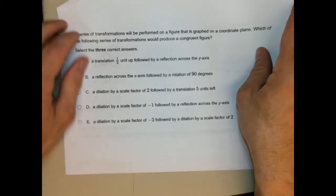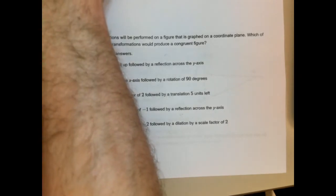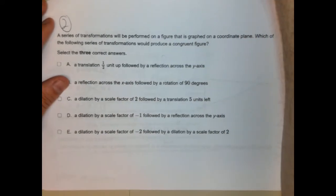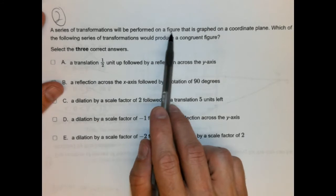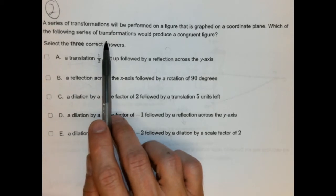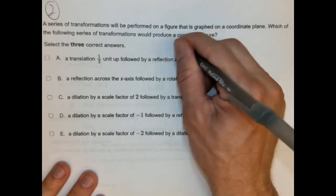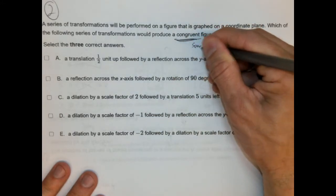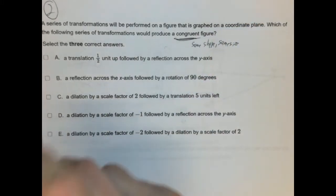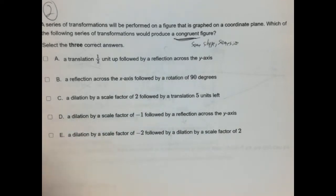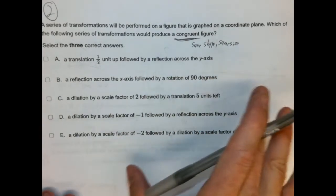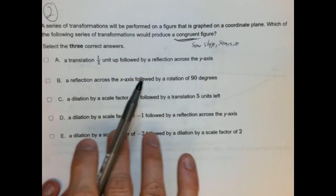Now this one, this one's kind of, this one can be tricky. This one can definitely be tricky if you're not paying close attention. So, this is number two. A series of transformations will be performed on a figure that is graphed on a coordinate plane. Which of the following series of transformations would produce a congruent figure? So, we need to know what congruent means. Congruent means same shape and same size. And by the way, the link to this test is in the video description, so make sure you're following along.